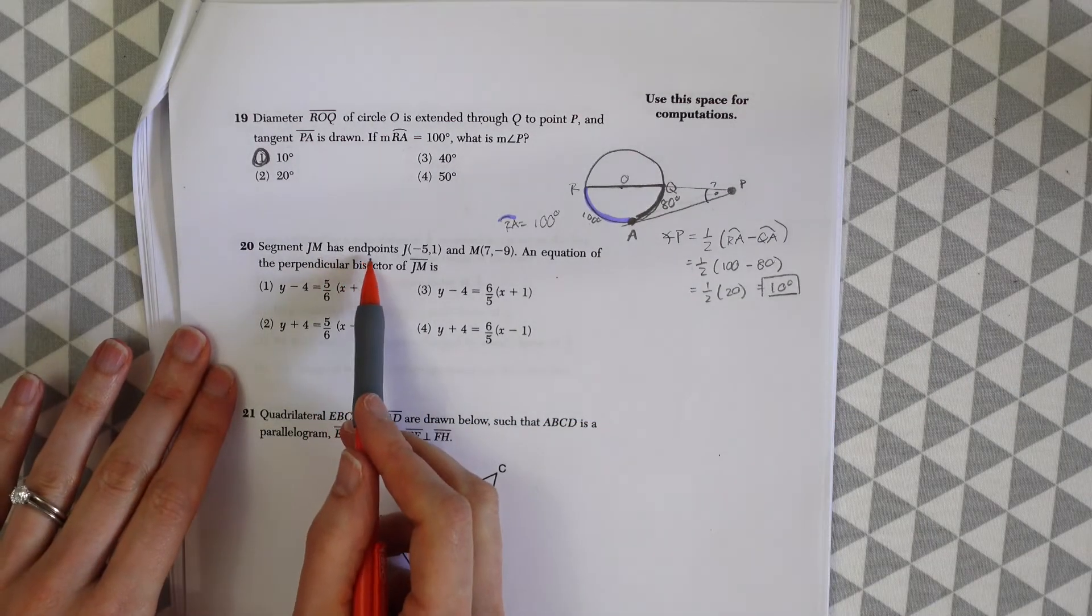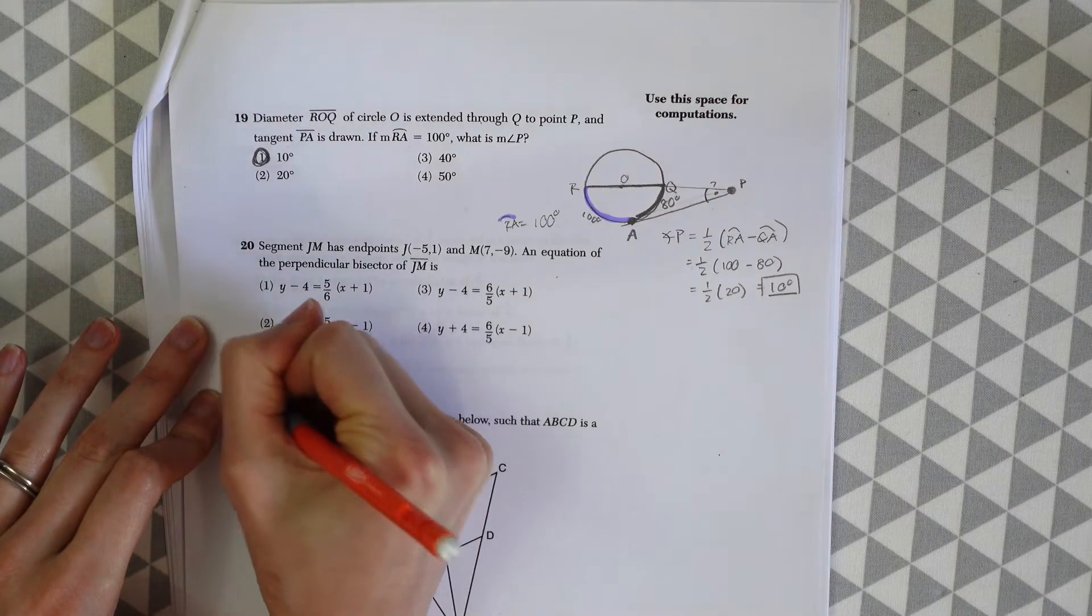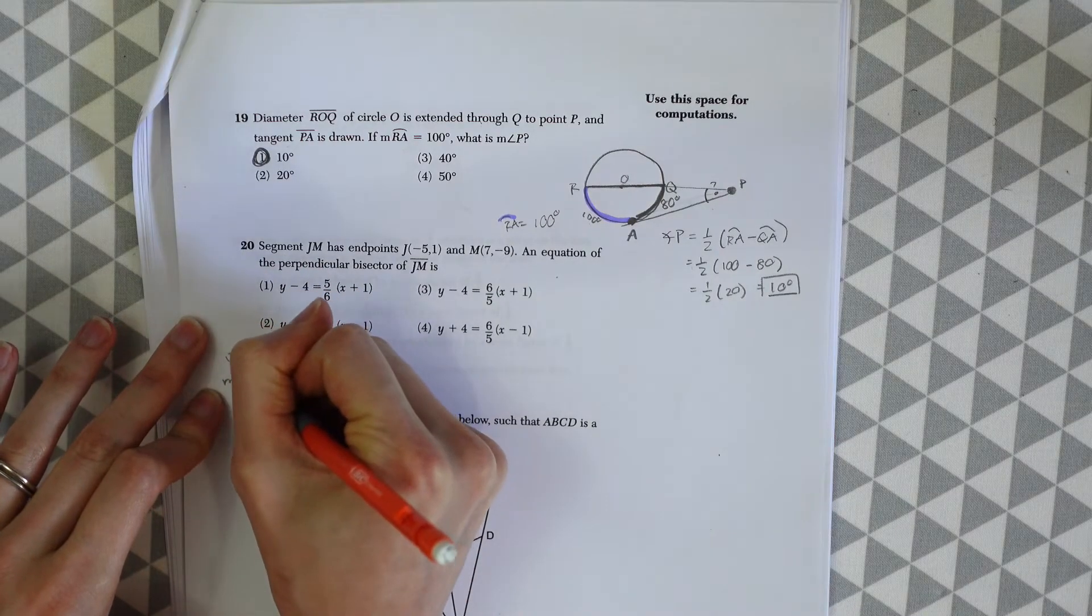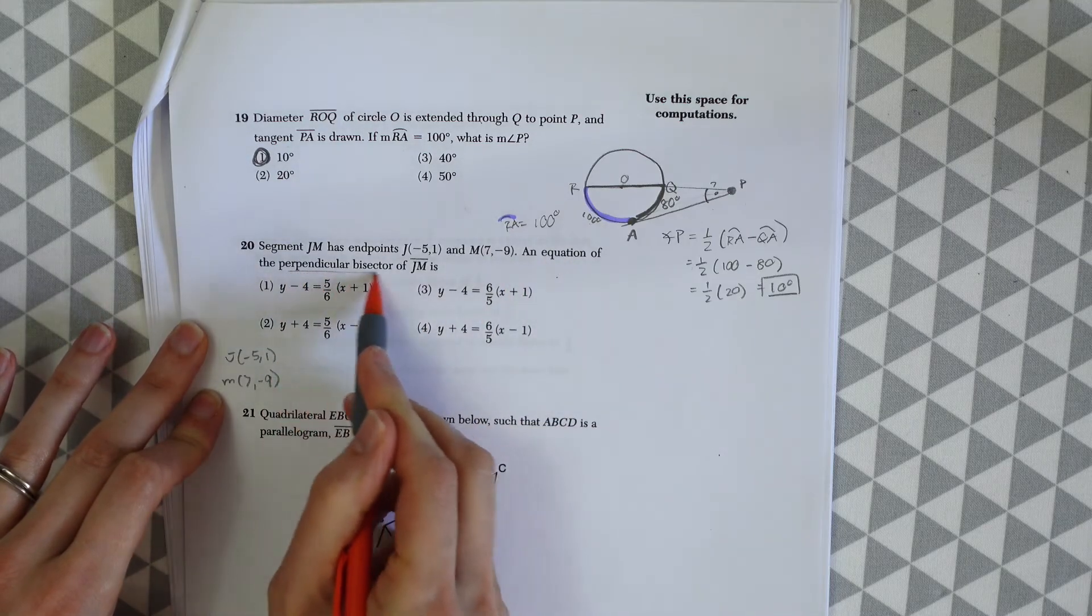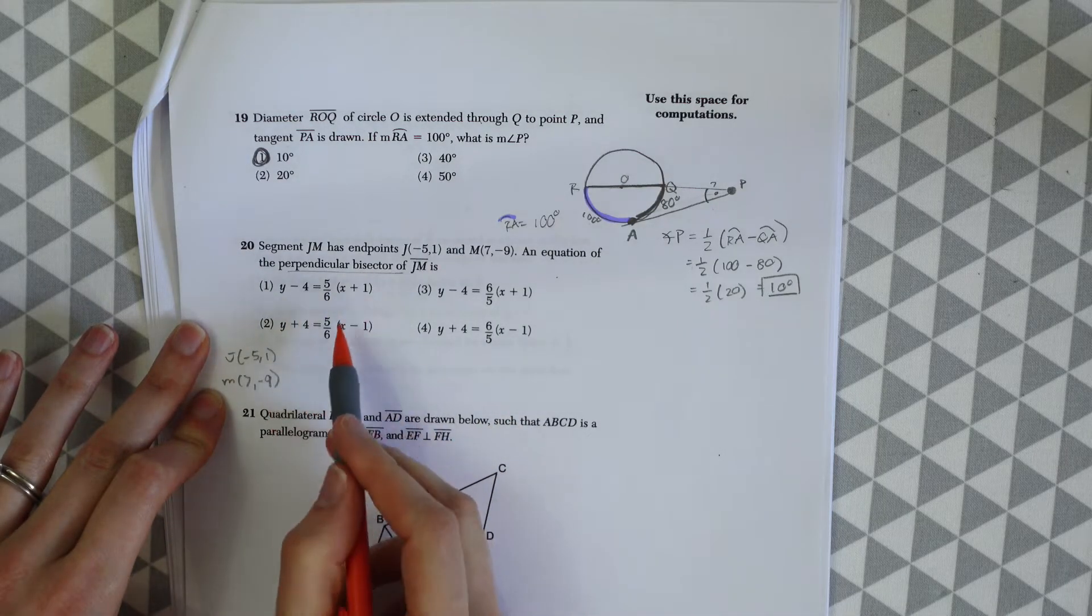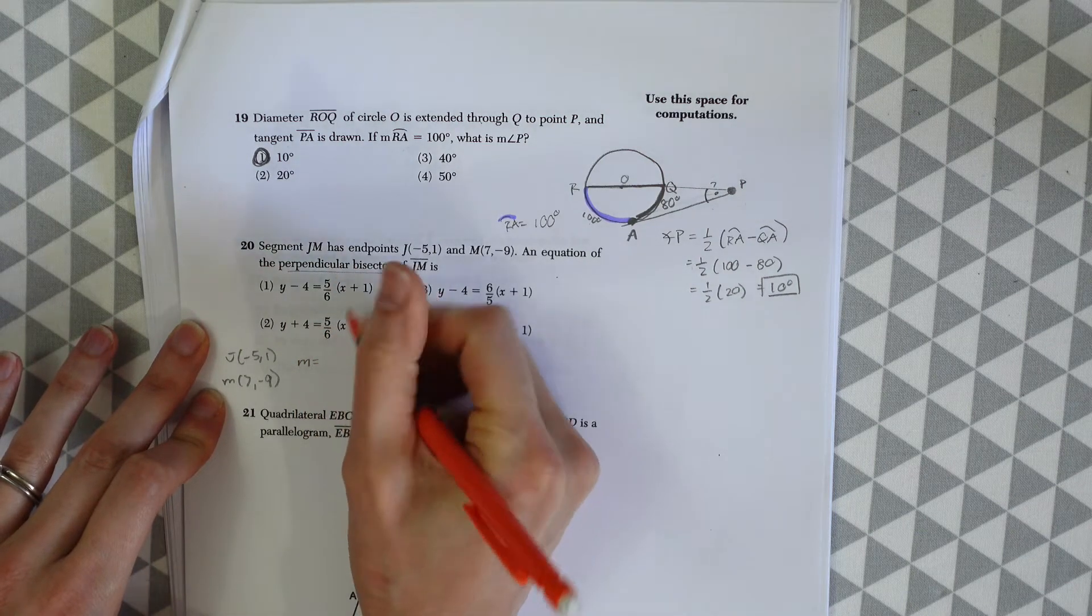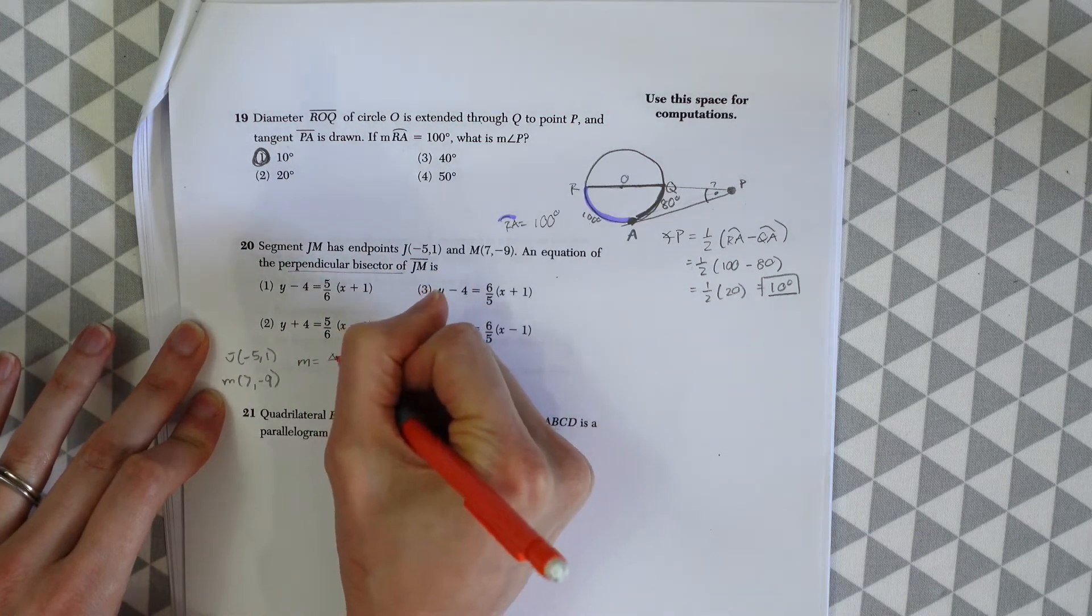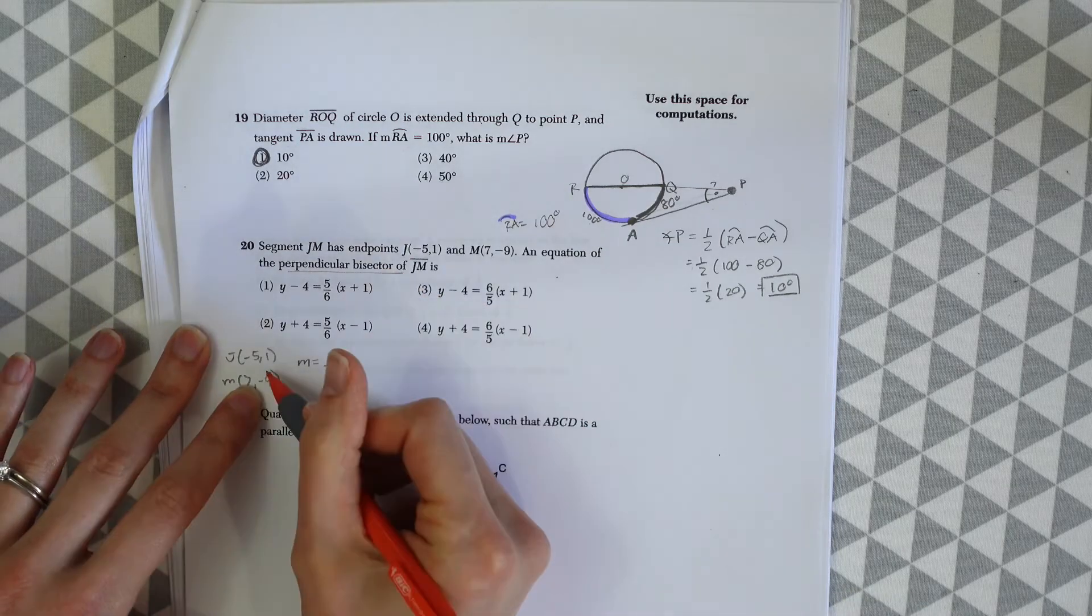Segment JM has endpoints J(-5, 1) and M(7, -9). An equation of the perpendicular bisector of JM is what? First we need to find the slope. To do that, we find the change in Y over the change in X, or rise over run. We have -9 minus 1 all over 7 minus -5, which is -10 over 12, reducing to -5/6.